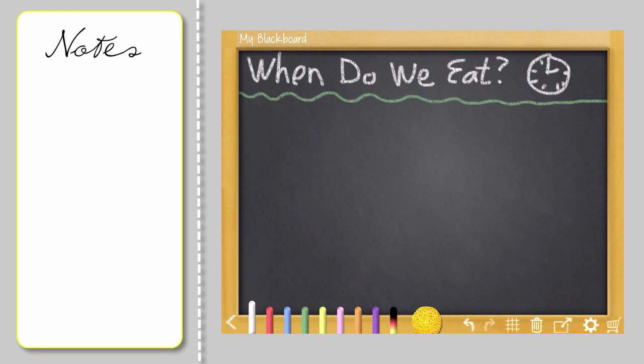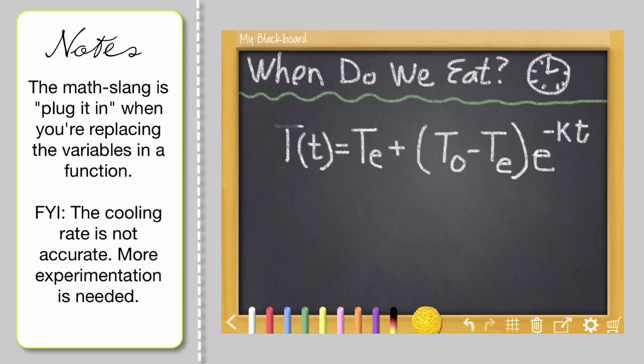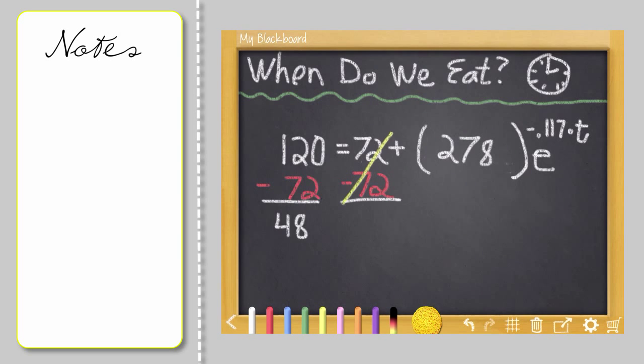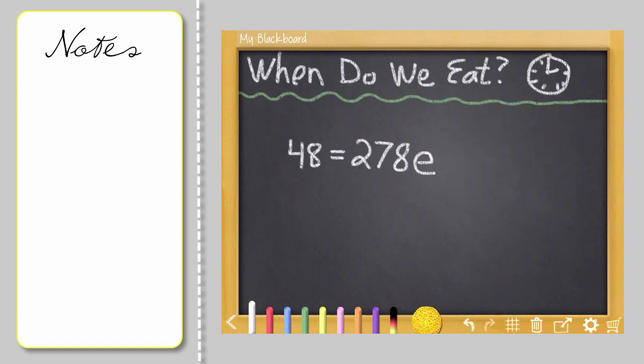So when do we eat? We're going to have to use the horrible looking equation again. And we're going to replace everything that we can. We're going to plug things in. So we want the temperature to be 120. The air temperature is 72. The starting temperature of the pizza is 350. And also here, we're going to write in 72 because that's the air temperature. And we're going to replace negative k with the cooling constant negative 0.117. We'll simplify what's in the parentheses. And we'll subtract 72 from both sides. And a quick little rewrite here so we have more room.